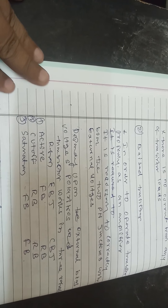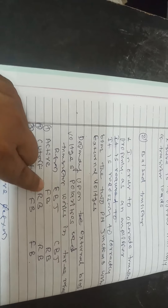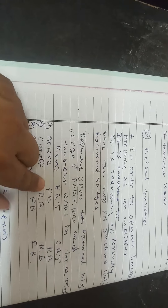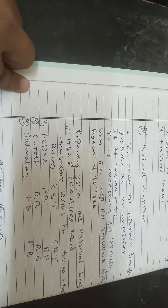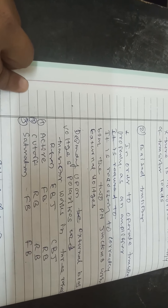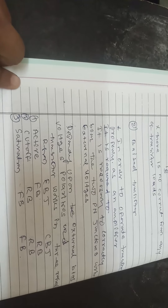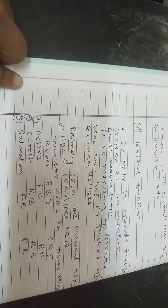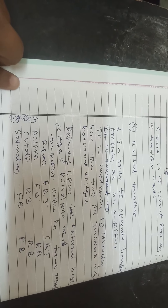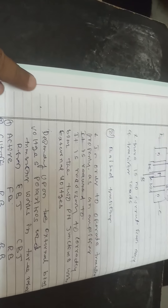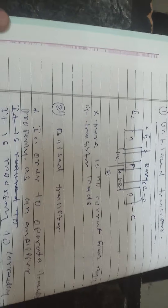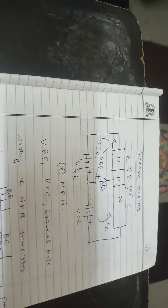There are three regions of operation: the active region, the cutoff region, and the saturation region. In the active region, the emitter-base junction is forward biased and the collector-base junction is reverse biased. In the cutoff region, both emitter-base and collector-base are reverse biased. In the saturation region, both junctions are forward biased. Forward bias means the N-type is connected to the negative terminal and the P-type to the positive terminal of the battery.